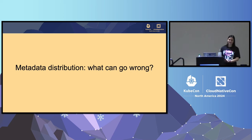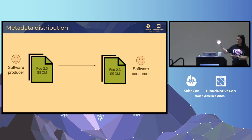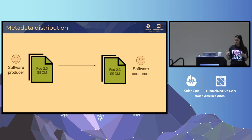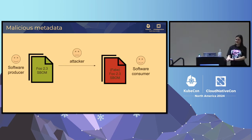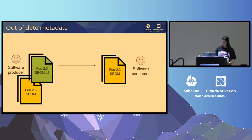Why do we need to talk about security of metadata distribution — why not just send it over the network? Using SBOMs as an example: you want the software producer to make an SBOM and you want the consumer to get the same SBOM the producer sent. The first thing that can go wrong is that somebody could replace the SBOM. If an attacker removes a vulnerable dependency from the SBOM, the end user won't be aware of that vulnerability and might deploy a bad version of software.